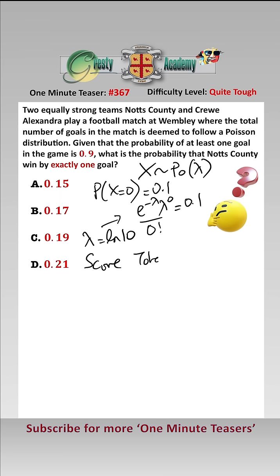Here is the score, the total goals, and the probability. The score could be 1-0 to Notts County, 2-1, 3-2, 4-3, and so on. The total goals are 1, 3, 5, and 7.